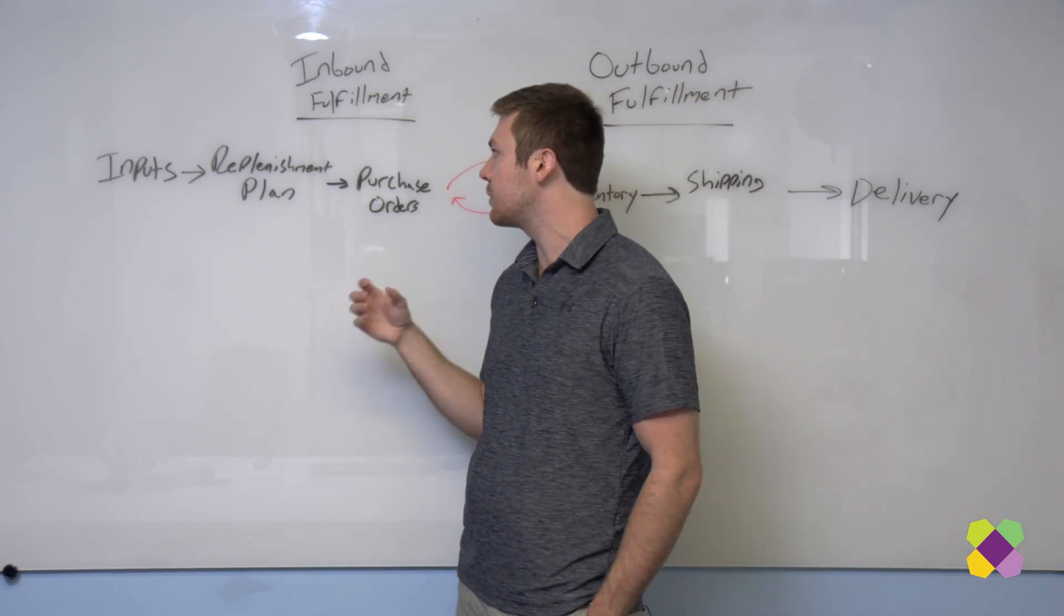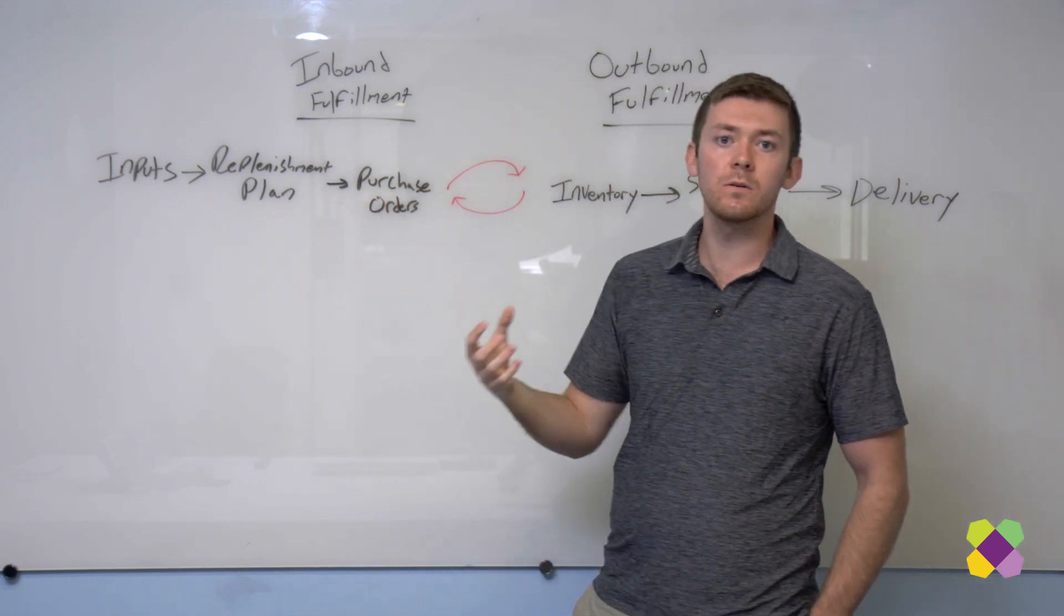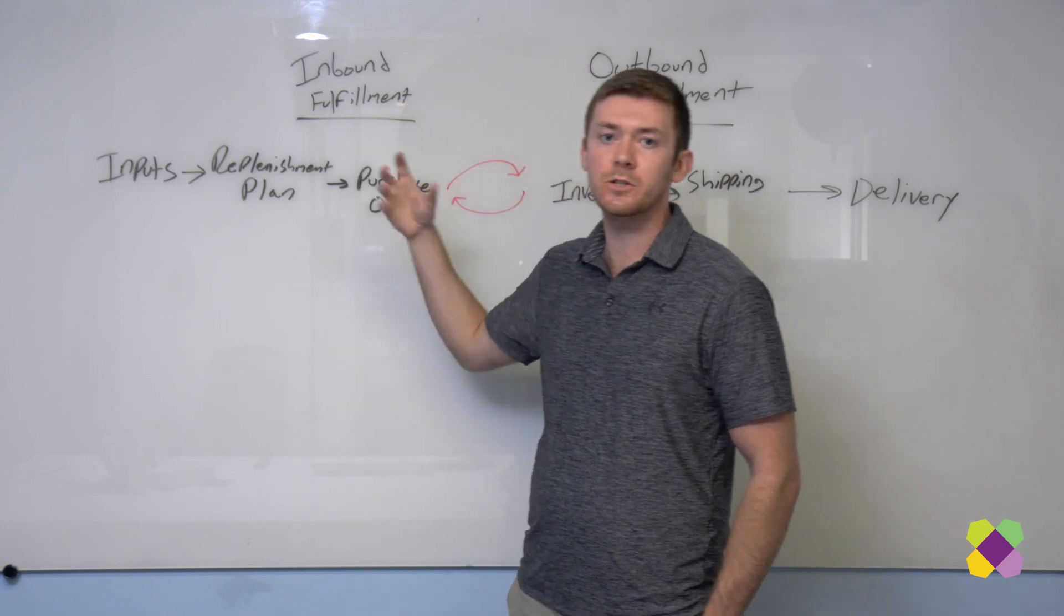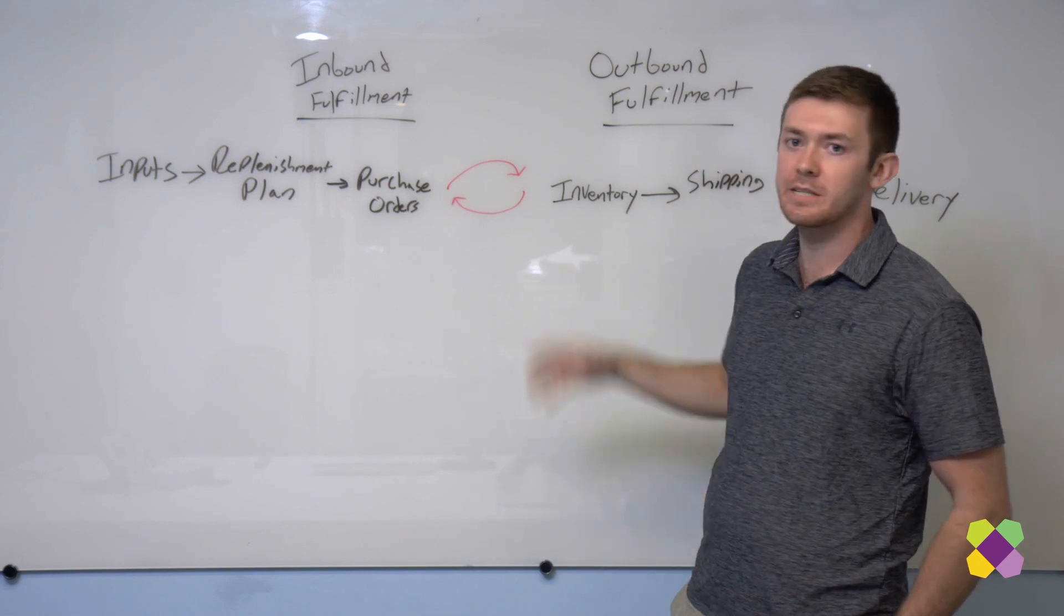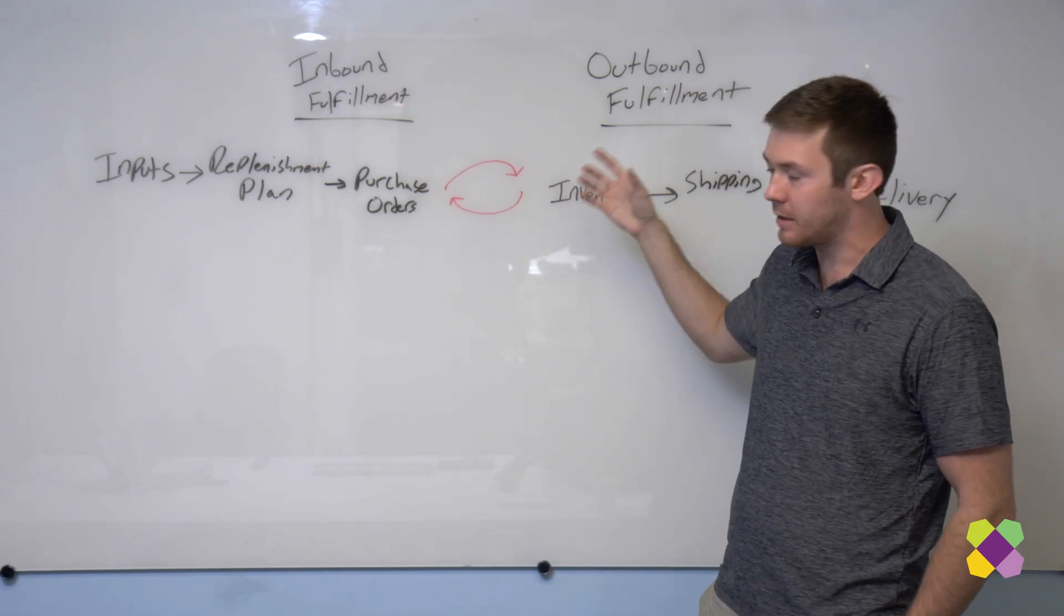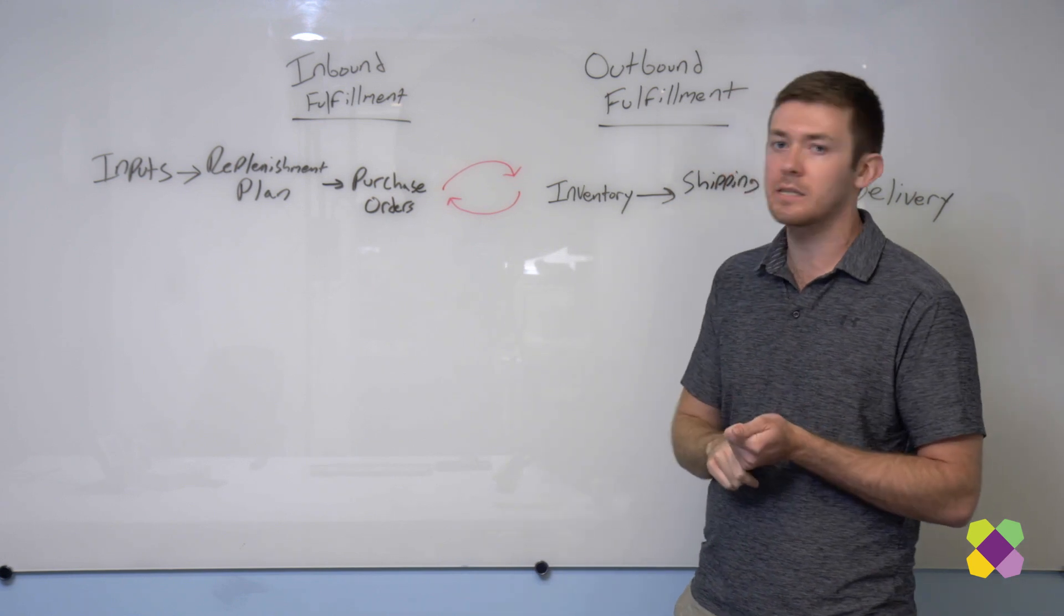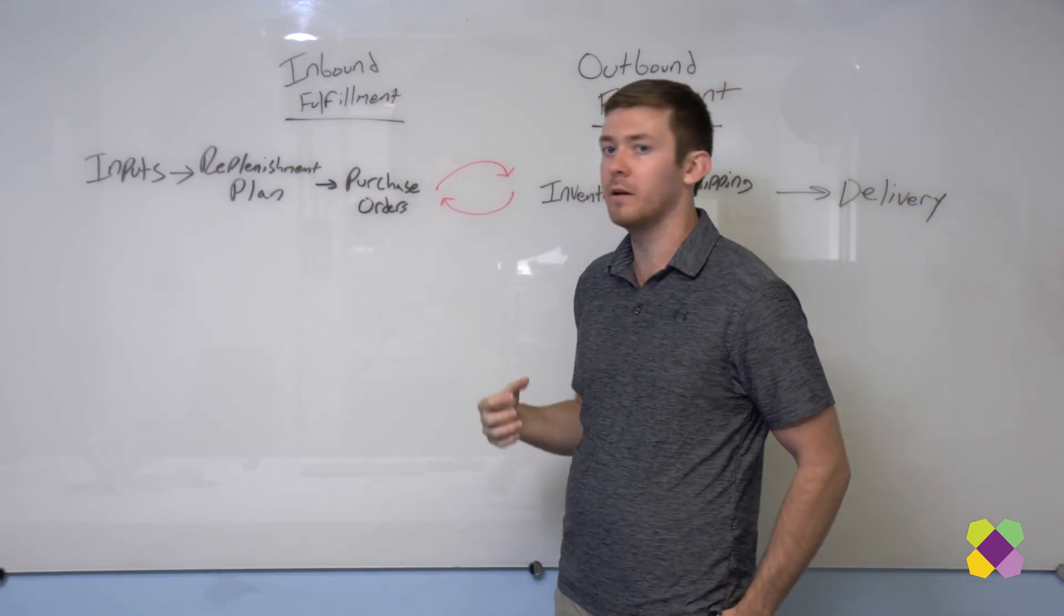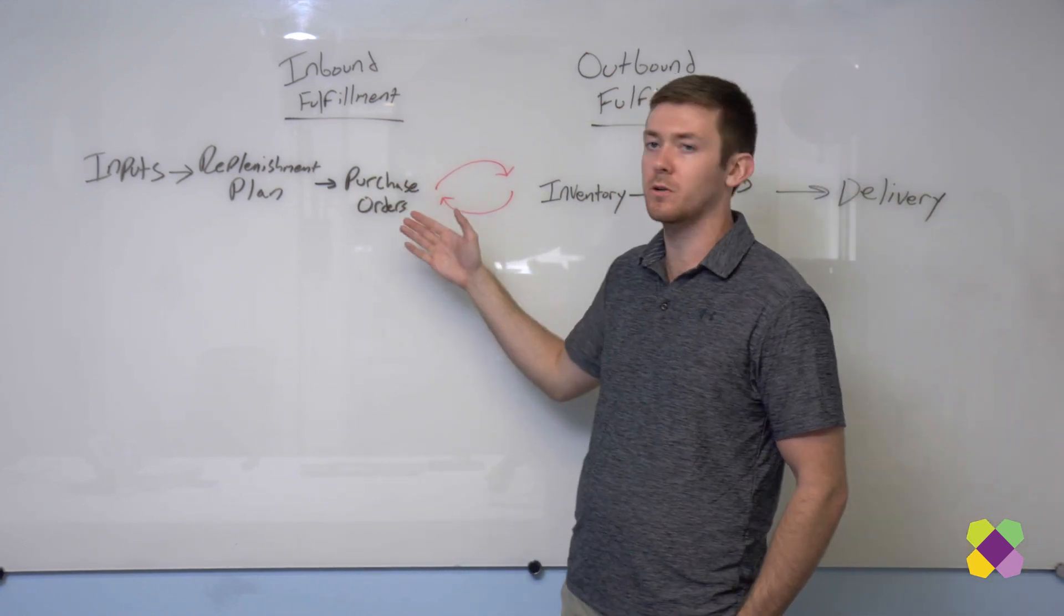And based on this, we've recently been creating a replenishment plan model called Byfair, which takes these inputs and outputs a purchase order plan where we're saying we expect demand to come in the future to these different locations within the US or Canada. We think you should be ordering these items on these dates into these induction facilities. And we surface those plans back to both our inventory planning team and our suppliers so they can actually create purchase orders against these.